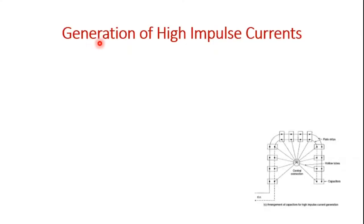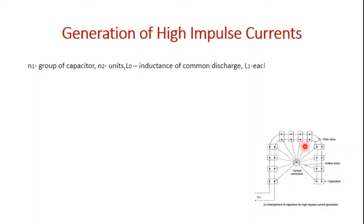For producing large values of impulse current, a number of capacitors are charged and discharged into the circuit in a parallel manner. In order to minimize the value of the effective inductance, the capacitors are divided into smaller units.